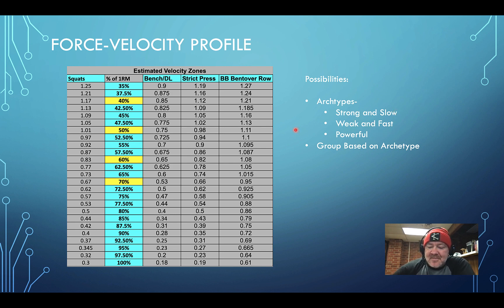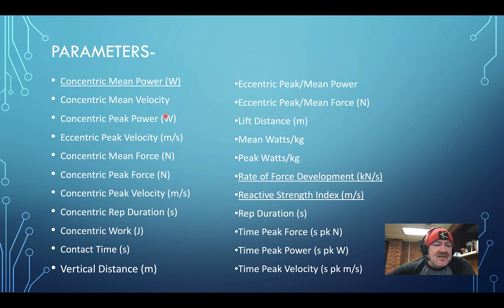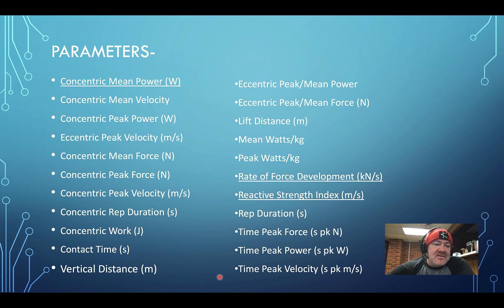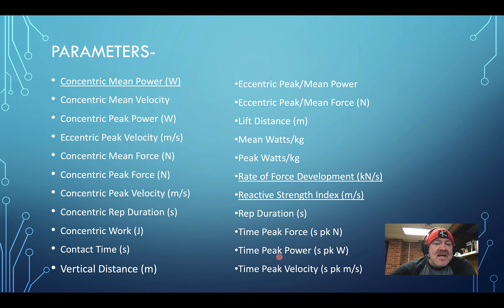Now, parameters. At GymWare we have many parameters — concentric mean, power, velocity, peak power. If you subscribe to the cloud, you get all of them. If you just have the Flex, it's awesome, but you won't get rate of force development, reactive strength index, time to peak force, or time to peak power. They did just add a lot of new features including eccentric parameters.